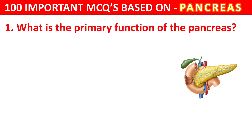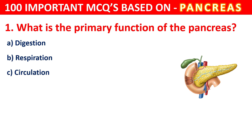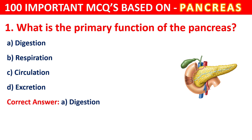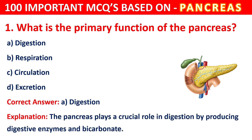What is the primary function of the pancreas? Your options are Digestion, Respiration, Circulation, or Excretion. The correct answer is A, that is Digestion. The pancreas plays a crucial role in digestion by producing digestive enzymes and bicarbonate.